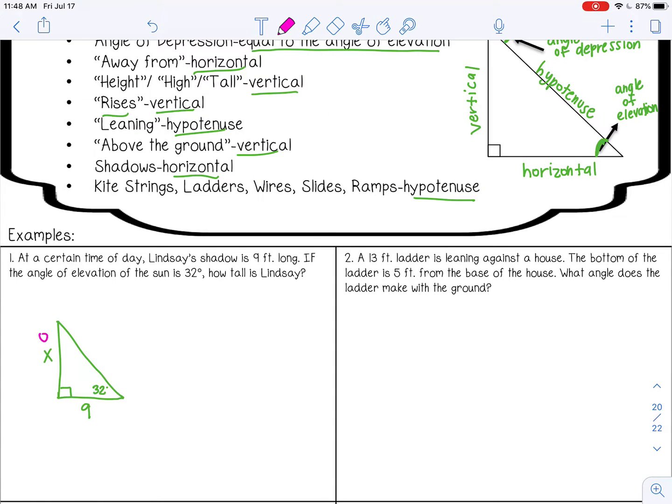So I have opposite and adjacent. So that would be tangent of 32 degrees equals x over 9. I'm going to multiply by 9 on both sides. So 9 times tangent of 32. And that gives me about 5.6. So 5.6 feet tall is my answer. Make sure you always put units.